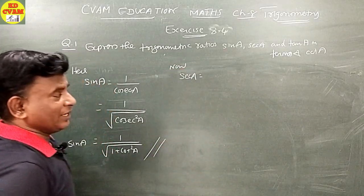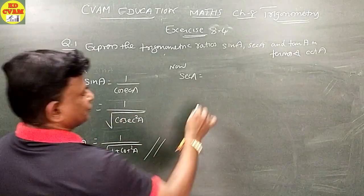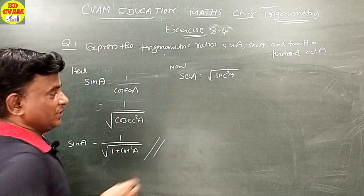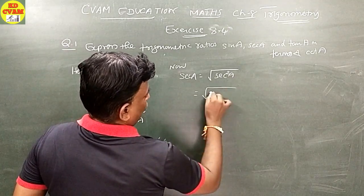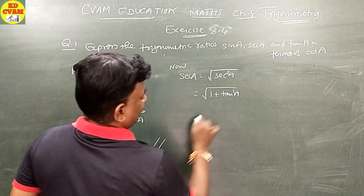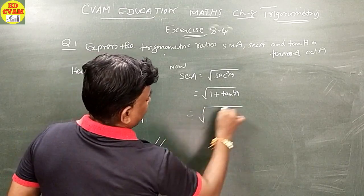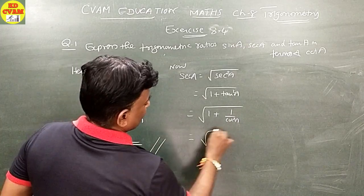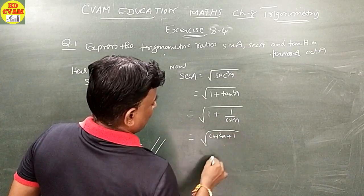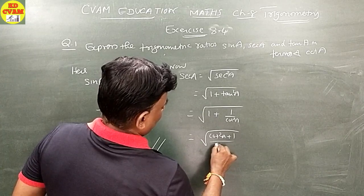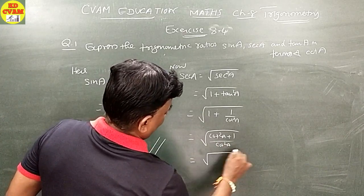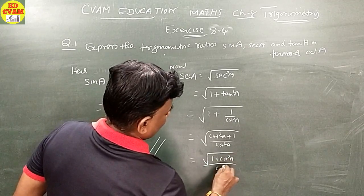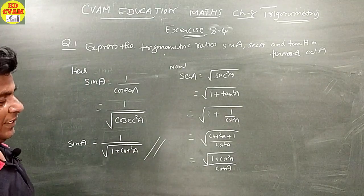Now, sec A is equal to square root of sec squared A. Sec squared A can be written as one plus tan squared A. But since we need it in terms of cot A, we rewrite: taking LCM as cot squared A, this gives cot squared A plus 1 upon cot squared A, that is, square root of one plus cot squared A upon cot A.